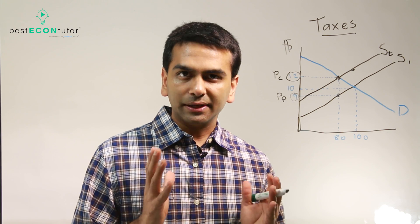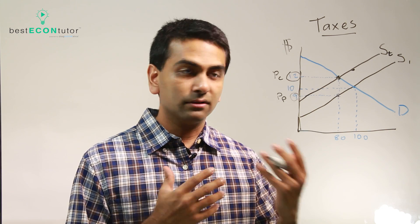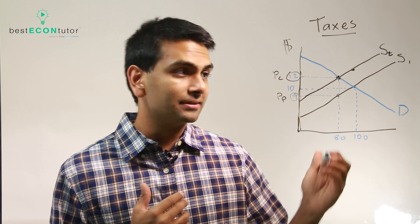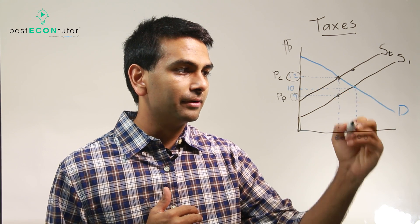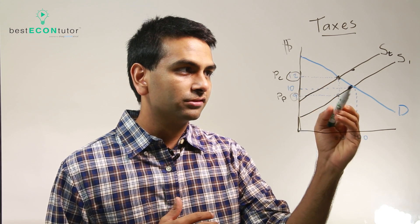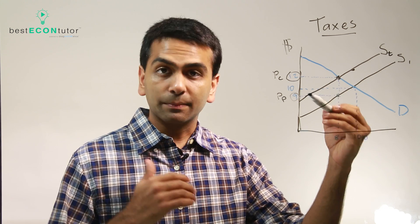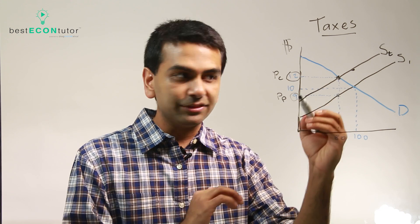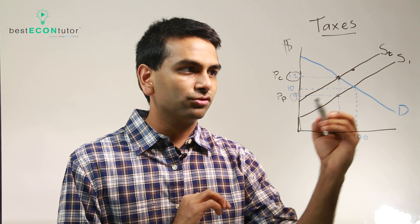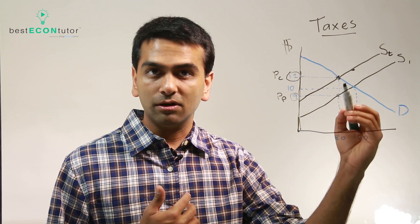Deadweight loss is how much less total surplus we have after the tax is imposed. First let's look at what the surplus was before the tax. Before the tax, when we were at an equilibrium of 100 units with a price of 10, the consumer surplus was this triangle — everything above 10 underneath the demand curve. The producer surplus was this triangle — everything underneath 10 and above the supply curve. So really this whole thing was the total surplus. Let's look at how much less we have now compared to all that.